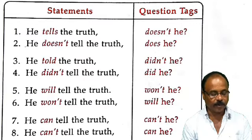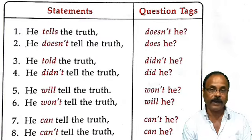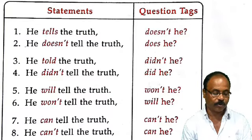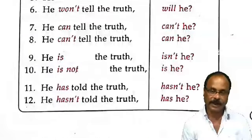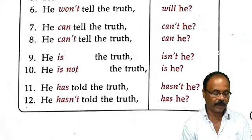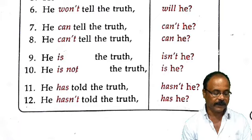'He will tell the truth.' — 'Won't he?' 'He won't tell the truth.' — 'Will he?' 'He can tell the truth.' — 'Can't he?' 'He can't tell the truth.' — 'Can he?' 'He is telling the truth.' — 'Isn't he?' 'He is not telling the truth.' — 'Is he?'